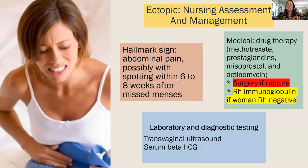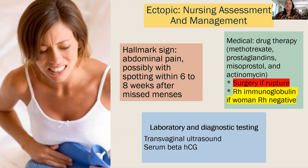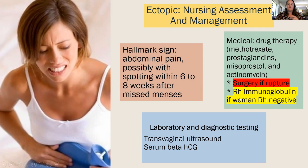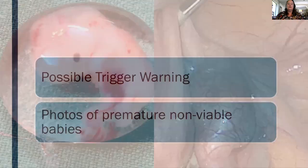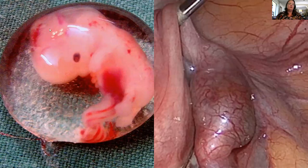The hallmark sign of ectopic pregnancy is abdominal pain, possibly with spotting. Diagnostic tests include transvaginal ultrasound and serial serum beta-hCG levels. If rupture is not imminent, medication may be given to stop fetal growth and allow the body to absorb the tissue. If rupture is imminent, surgery is required. If the woman is Rh negative, a dose of RhoGAM is recommended after this procedure.